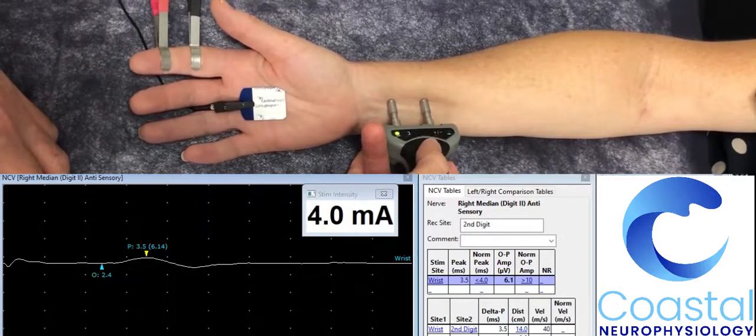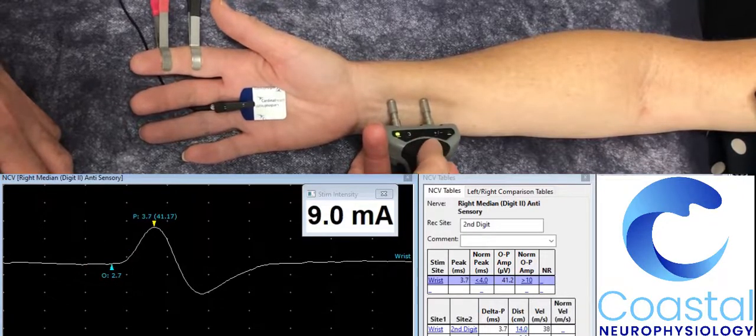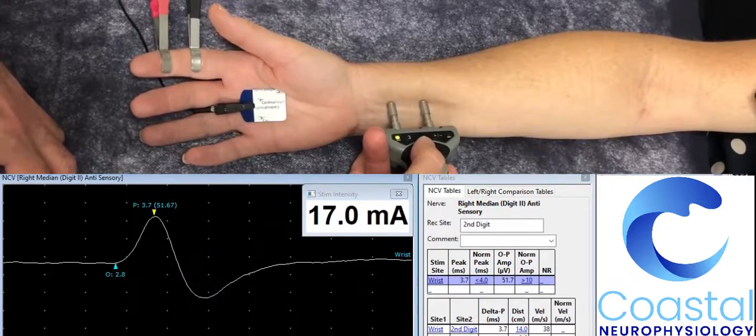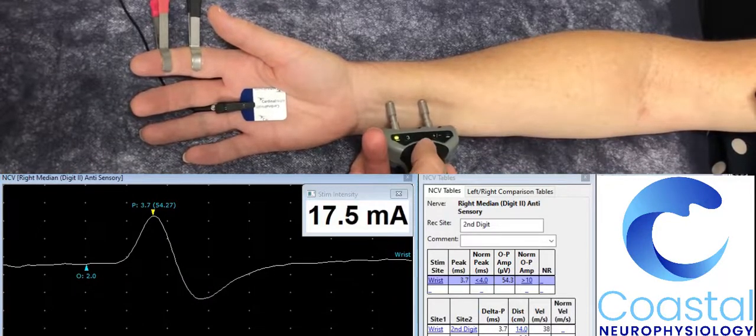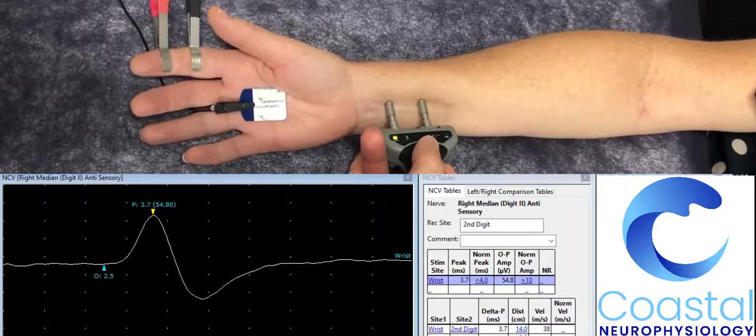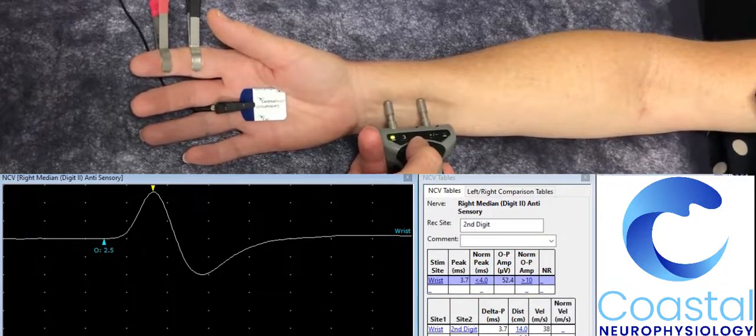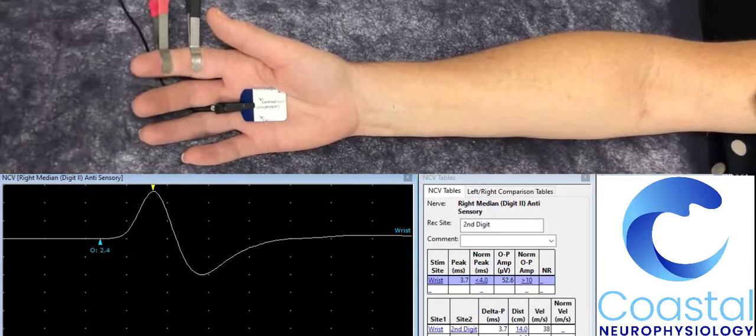As I gently increase the signal intensity, you can see this action potential propagate on my screen, and eventually it gets to a point where it doesn't get any larger despite the fact that I increase my signal intensity. If I average this signal out, you can see how clear and apparent the signal becomes.